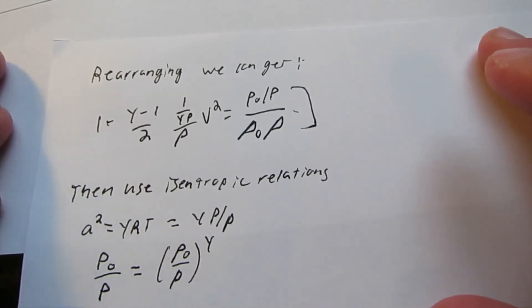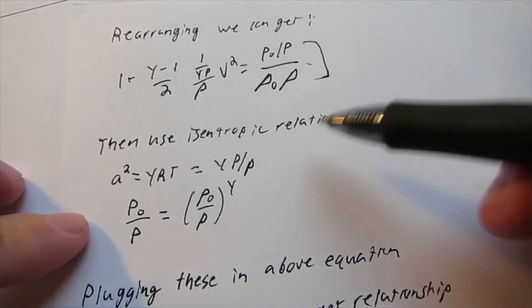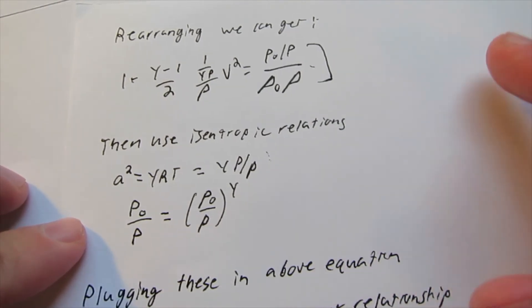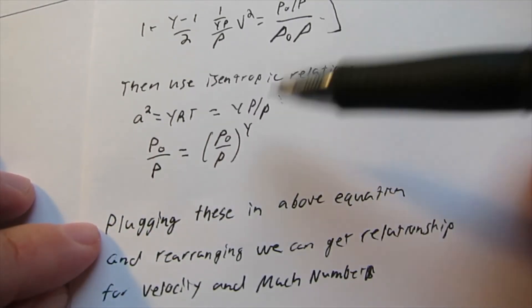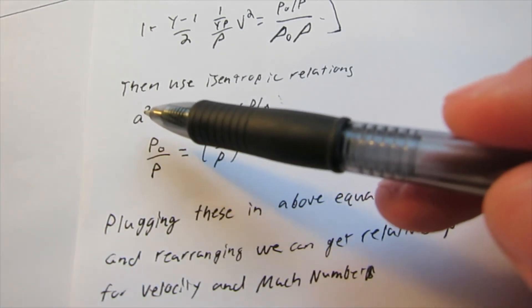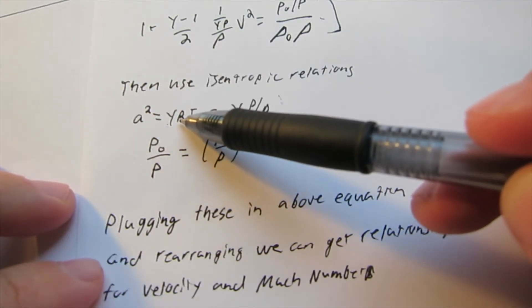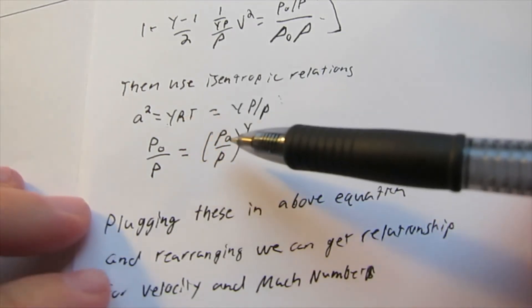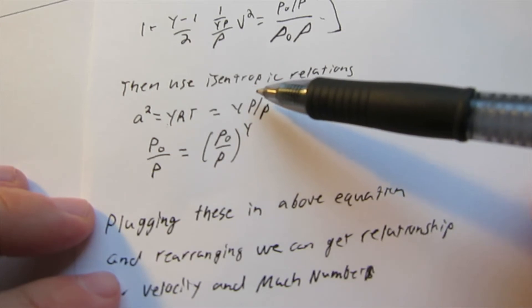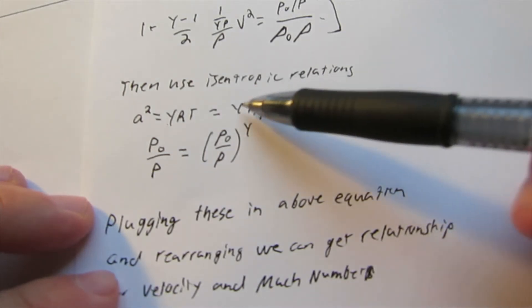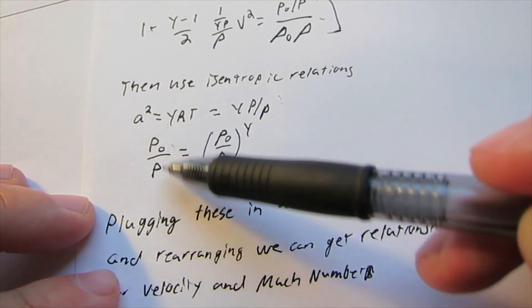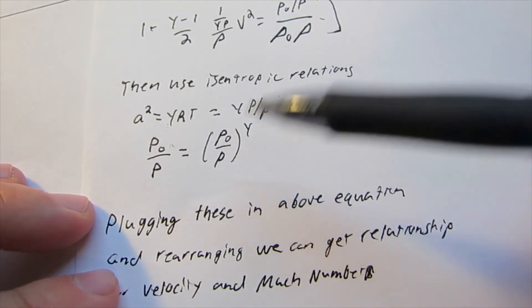So now we have this form here, then we're going to use our isentropic relations. These right here, you can find these in textbooks, online, which kind of have the relationships between, this is the speed of sound equals gamma times the R value times the temperature, and that can be rearranged as gamma pressure divided by density. We also have this relation here between stagnation pressure and pressure and then density.